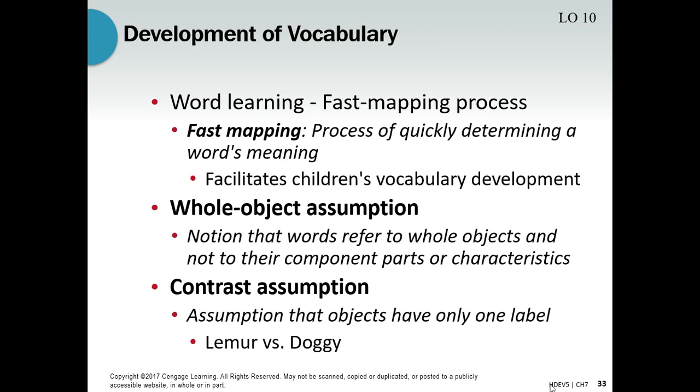But right around two years old, they go into something we call fast mapping. What it is, is that they are trying to learn more and more words. The brain has a few ways of doing this. I want to talk about a couple of them.